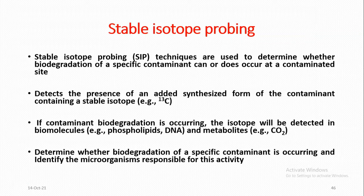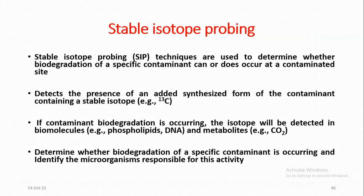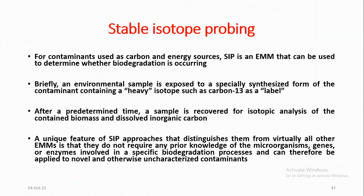Stable Isotope Probing (SIP) techniques are used to determine whether biodegradation of a specific contaminant can or does occur at a contaminated site. This involves the use of a specially synthesized form of the contaminant containing a stable isotope. If contaminant biodegradation is occurring, the isotope will be detected in biomolecules, e.g., phospholipids or DNA, and metabolites, e.g., carbon dioxide. SIP can identify the microorganisms responsible for this activity. An environmental sample is exposed to a form of the contaminant containing a heavy isotope such as carbon-13 as a label. After a predetermined time, a sample is analyzed for isotope analysis of the contained biomass and dissolved organic carbon.